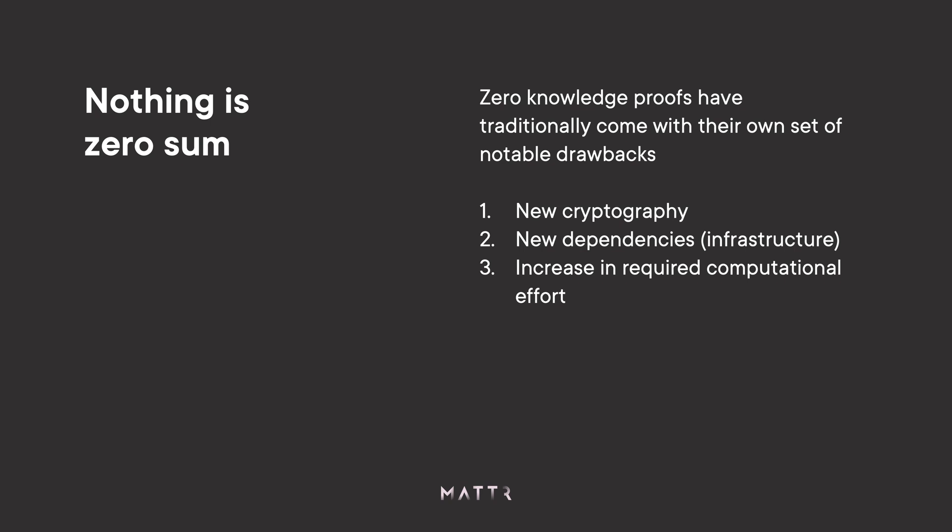Some ZKP solutions put forward to date have introduced new dependencies and new aspects of infrastructure, meaning the way we treat ZKPs is very different from how we treat other digital signatures. That difference leads to non-uniform infrastructures, ZKP-only assertions versus all the others, and that bifurcation hurts interoperability, increases the barrier of entry for vendors, and is counter to achieving ZKPs as a viable solution in an ecosystem.